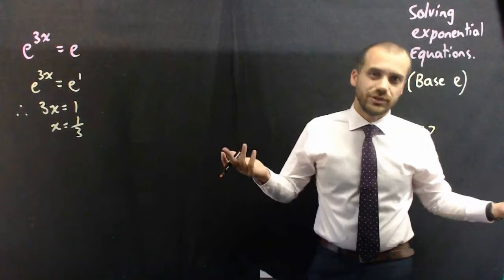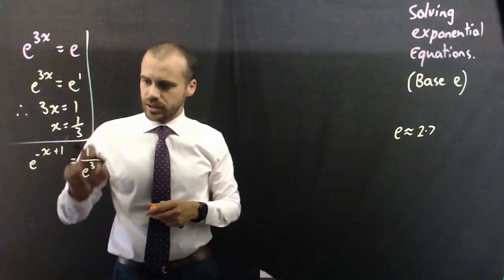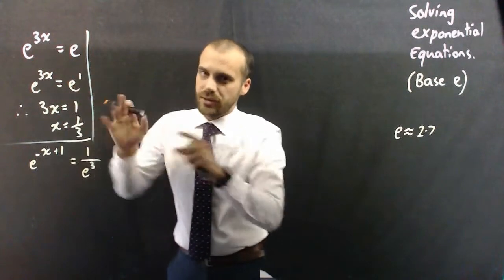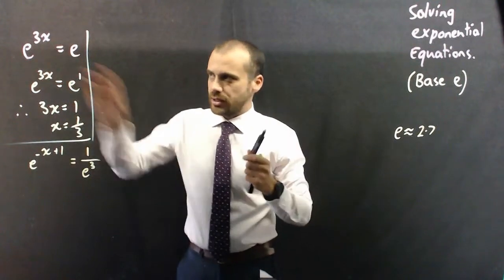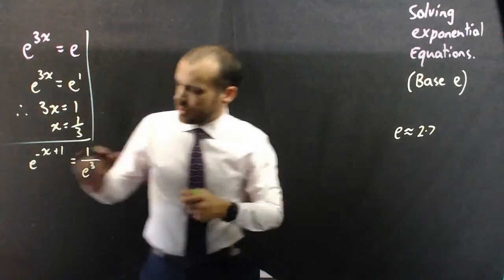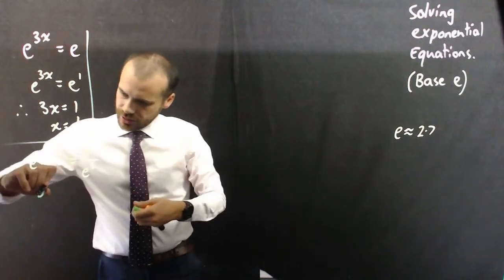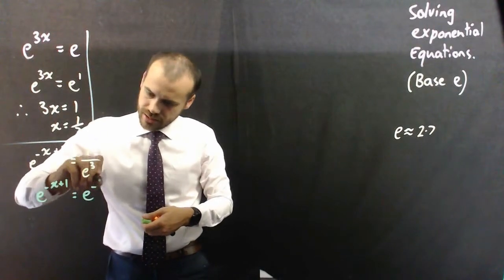Of course, you can do much more difficult stuff than that. So, for example, something like this: e to the negative x plus 1 equals 1 over e to the 3. Now, you really want to get it to look like that. By that, I mean a base, the same base on either side, and then we can sort of do this therefore thing. So, I can rewrite that as e to the negative x plus 1 equals e to the negative 3.